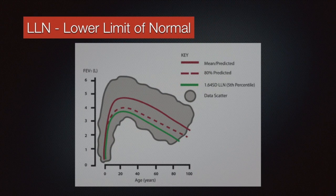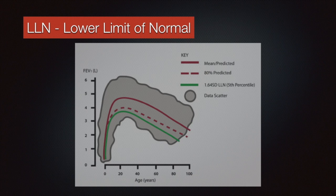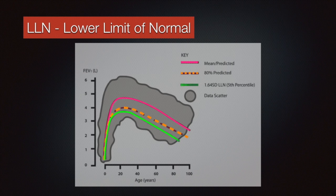Now LLN, lower limit of normal. In pulmonary function test reporting we are generally concerned only with low values, and since not all parameters are normally distributed, this has been stated as the lower limit of normal LLN, which is equal to the fifth percentile of a healthy population.